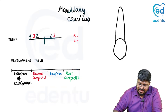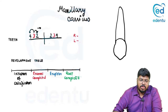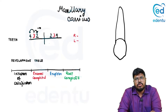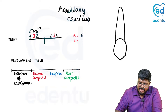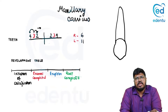The canine is bounded mesially toward the midline by the maxillary lateral incisors and distally by the maxillary first premolar. According to the universal system, the maxillary right canine is number six and the left canine is number eleven. According to the FDI system, they are denoted as one-three and two-three.